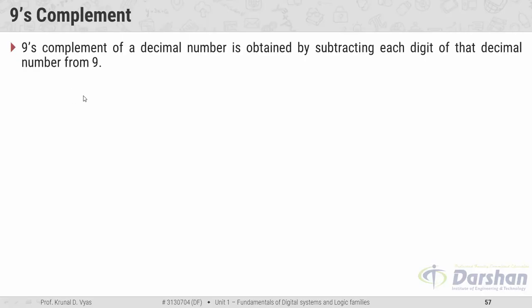The second section covers 9's and 10's complement. 9's complement is the same as 1's complement in binary — that is, 1's complement of a binary number corresponds to 9's complement of a decimal number. The method: the 9's complement of a decimal number is obtained by subtracting each digit of that decimal number from 9. In 1's complement, we subtracted each digit from 1.